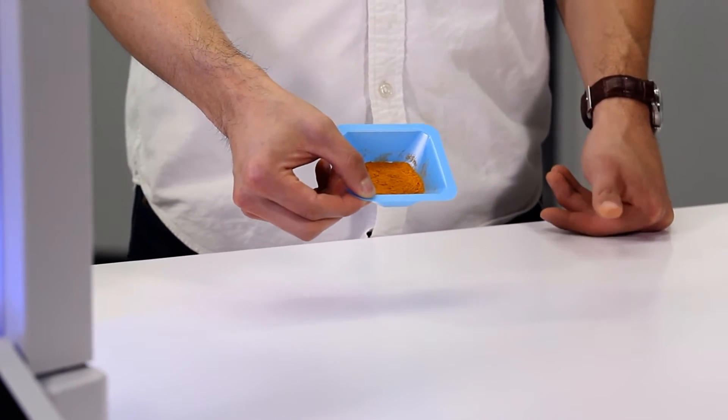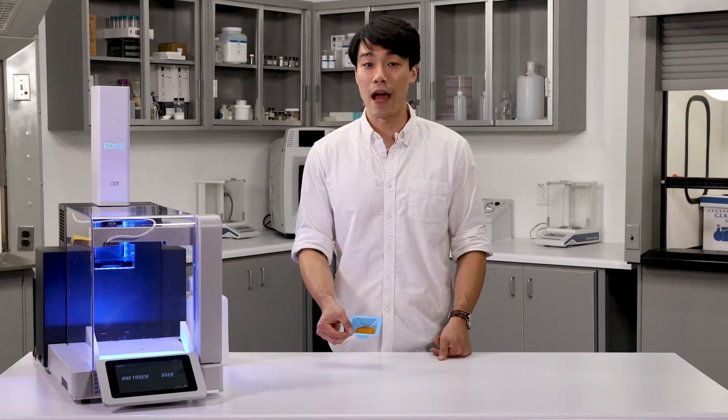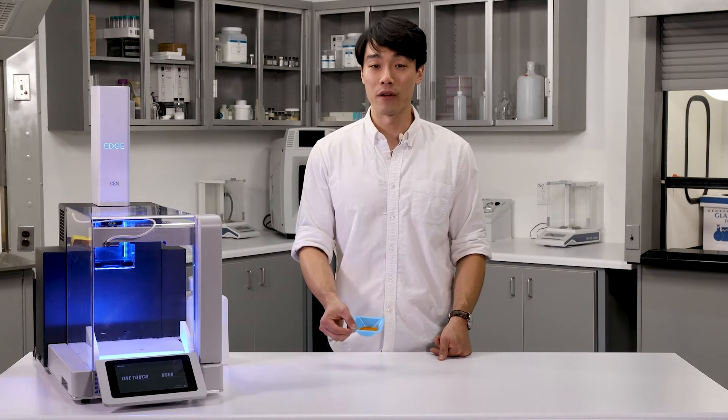More specifically, the root of the turmeric plant, which is dried and ground to make the powder we are all familiar with. For anyone who's cooked with turmeric, we all know how much it stains fingers and cookware, so imagine how well it'll dye.